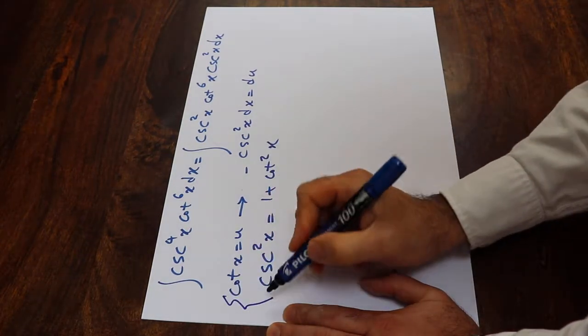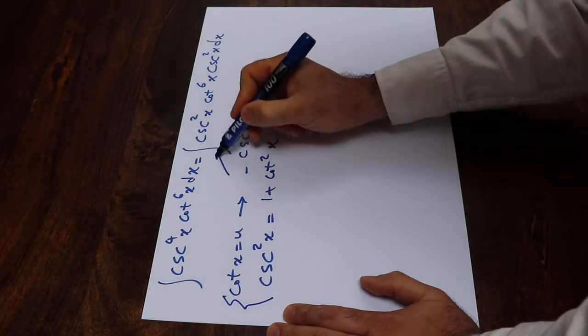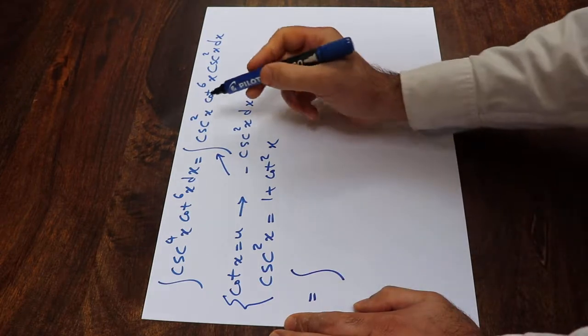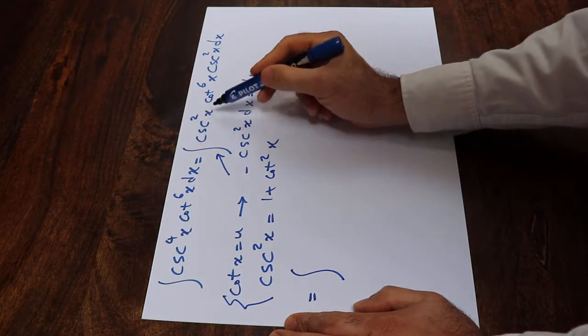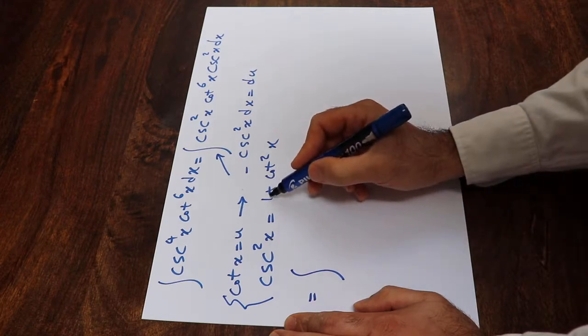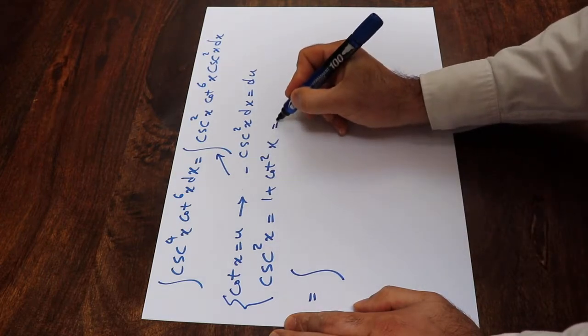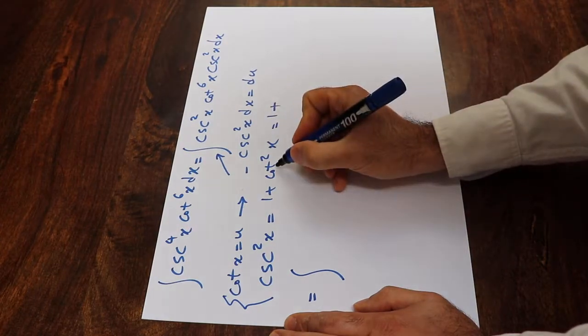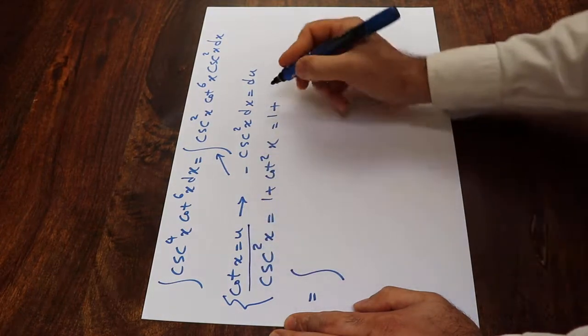So now if you substitute this expression into this integral, you can rewrite it as integral of cosecant squared x. Cosecant squared x equals 1 plus cotangent squared x, and we know that 1 plus cotangent squared x equals 1 plus u squared.